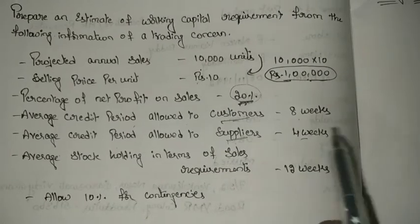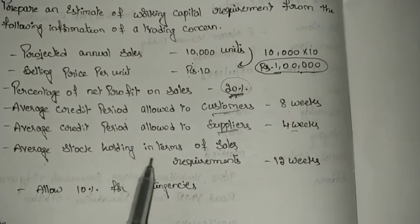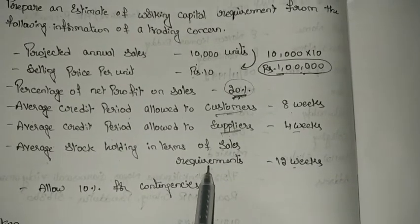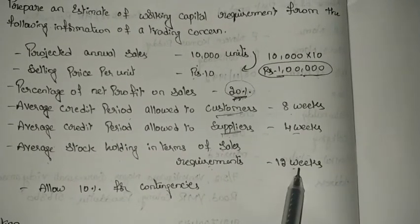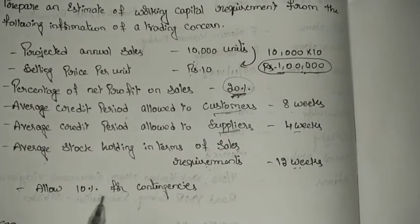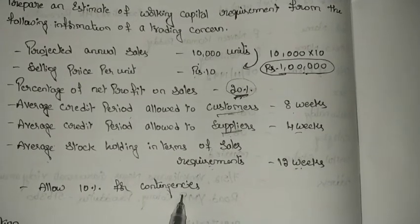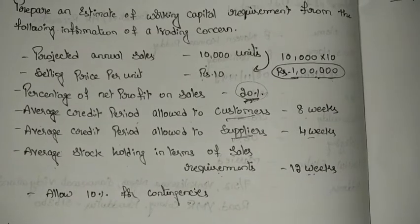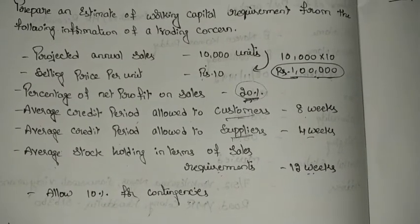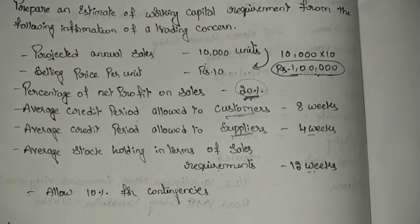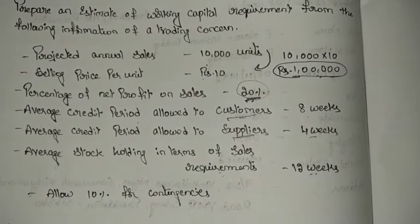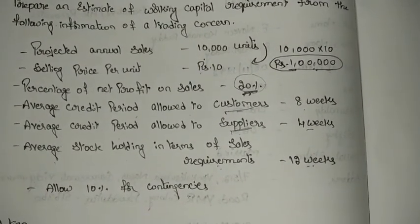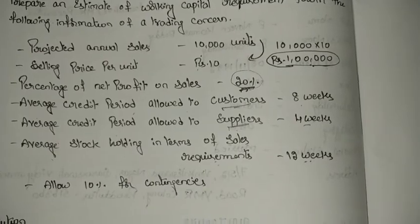The average credit period allowed to suppliers is 4 weeks — suppliers give the company time to pay. Average stock holding in terms of sales requirement is 12 weeks. They are also giving 10% for contingencies. This is all the information given for the trading concern, and we are asked to prepare a statement of working capital requirement.